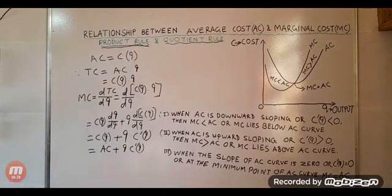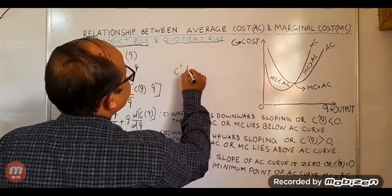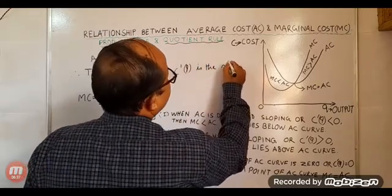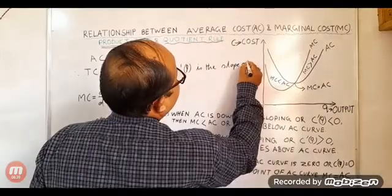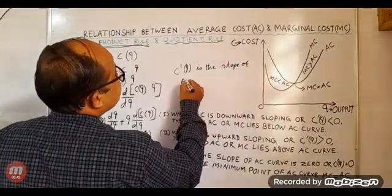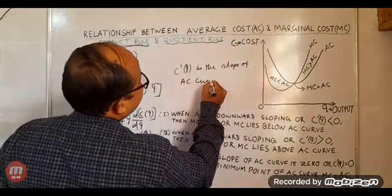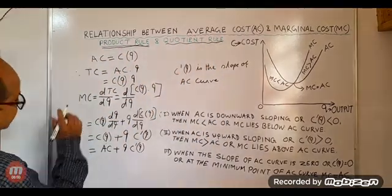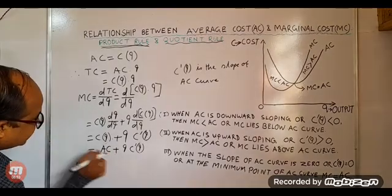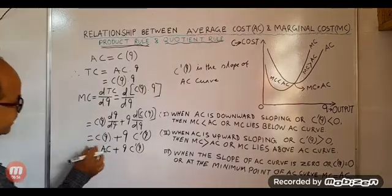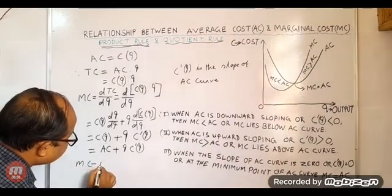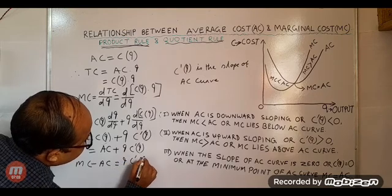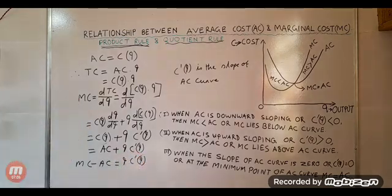Now, what is C'(Q)? C'(Q) is the slope of the average cost curve. Taking AC to the left-hand side, we get MC minus AC equals Q · C'(Q).